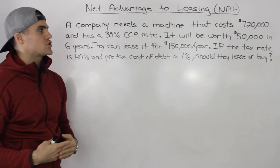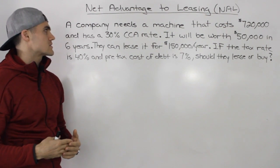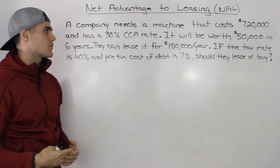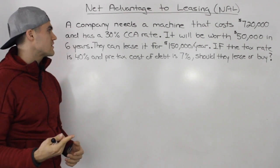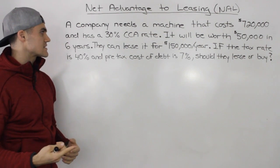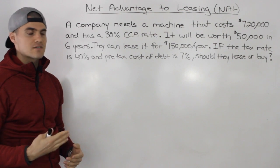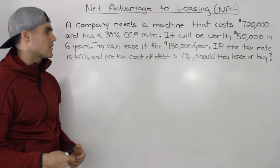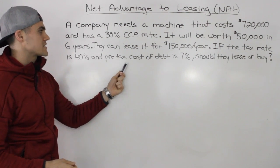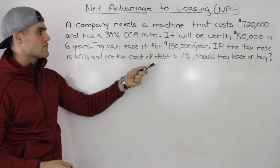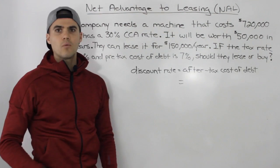A company needs a machine that costs $720,000 and has a 30% CCA rate. It will be worth $50,000 in six years. They can lease it for $150,000 per year. The tax rate is 40% and the pre-tax cost of debt is 7%. Should they lease or buy?